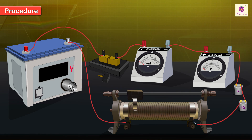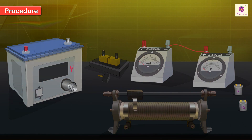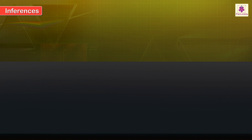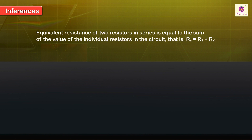Inferences: The equivalent resistance of two resistors in series is equal to the sum of the individual resistors in the circuit, i.e., RS equals R1 plus R2. Procedure: Disconnect the devices.